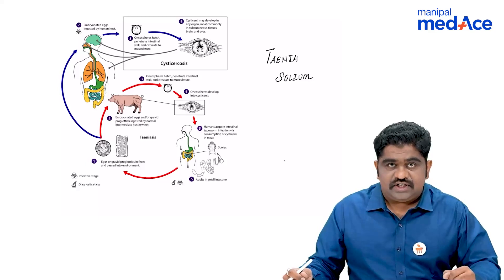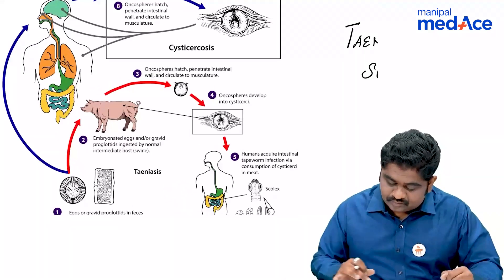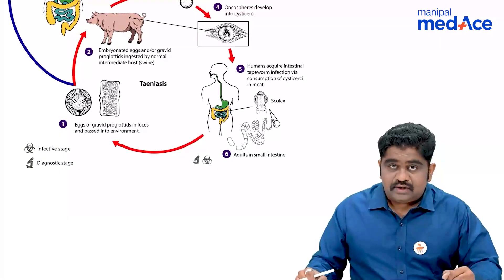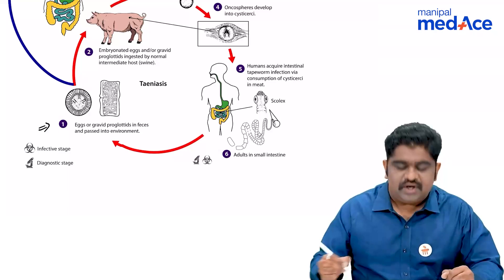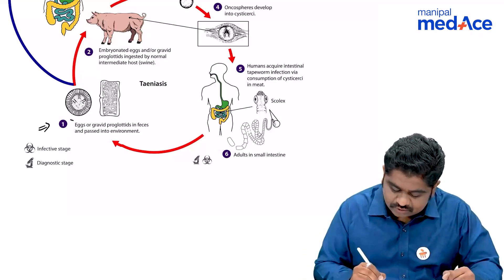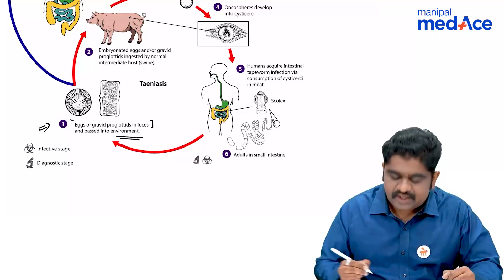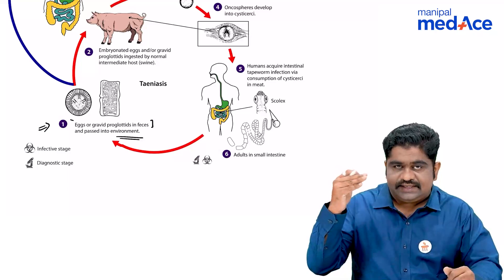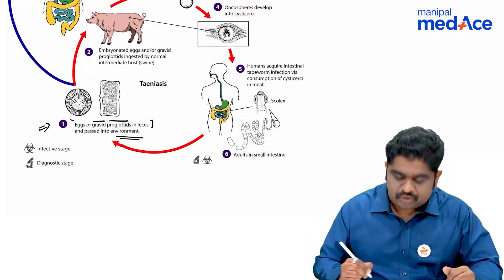Now, this is the life cycle of Diniasoleum. The picture is from CDC Atlanta. Here, look at the number 1. It is here. The cycle starts from here. We have the eggs of gravid proglottids in the feces which are passed into the environment. An adult is passing out the feces.